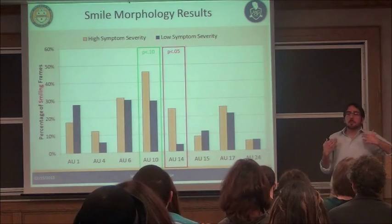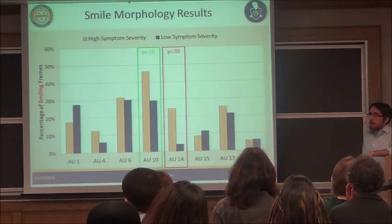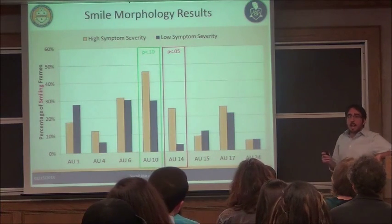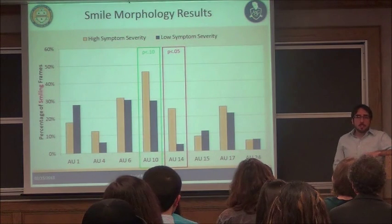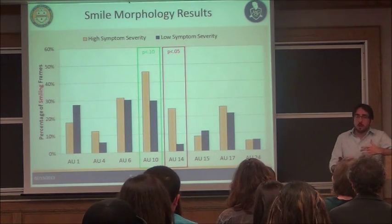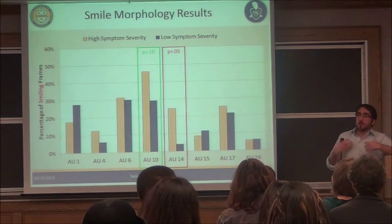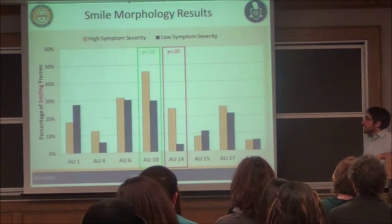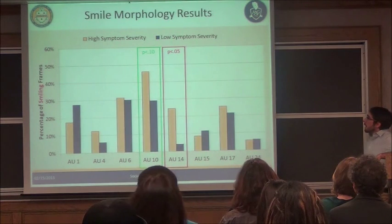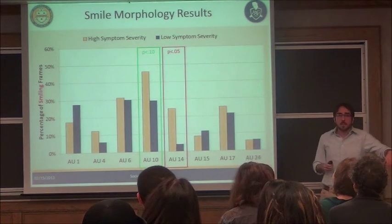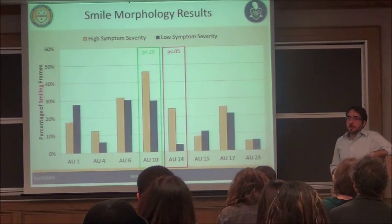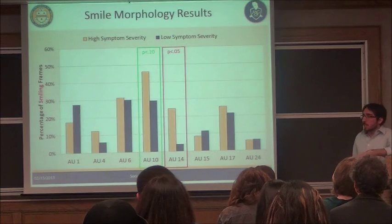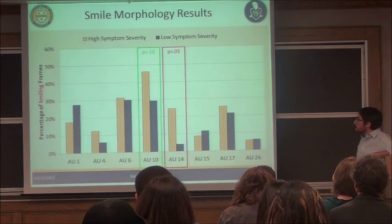We also looked at different types of smiles and whether they change with symptom severity. AU14, the contempt expression, not only happens more frequently overall when severely depressed, but when smiling, it tends to be included as well — contempt is sneaking into the smile. Similarly, AU10, the lip raise characteristic of disgust, is also happening very frequently during smiles when severely depressed, and that goes away when they remit. So even when apparently being polite or signaling happiness, disgust and contempt are sneaking in.